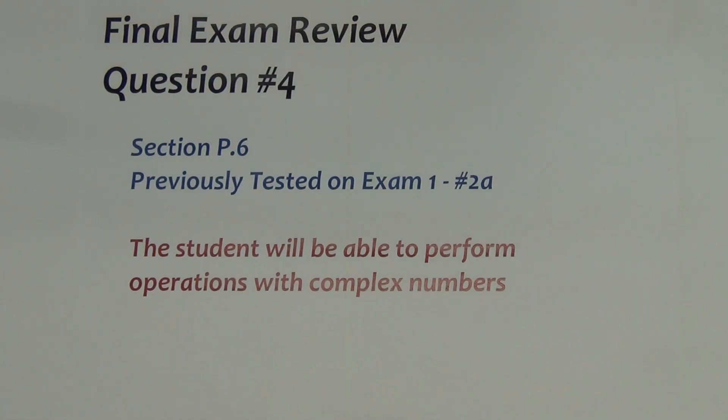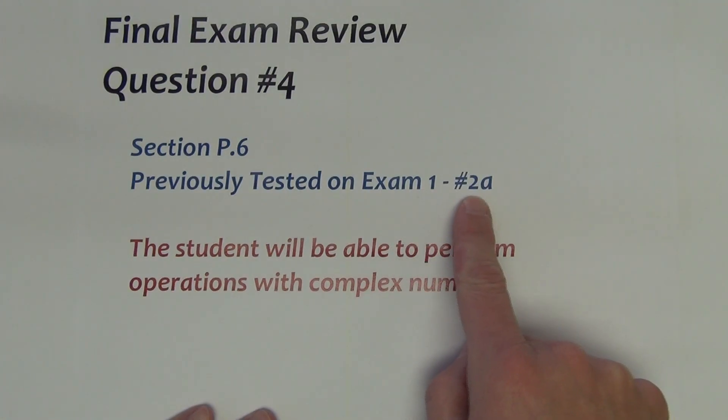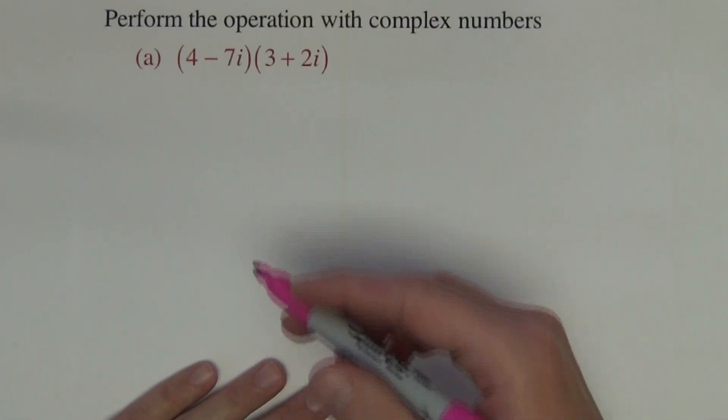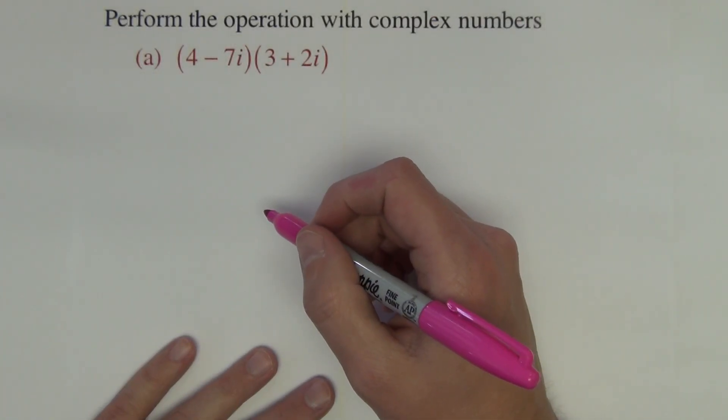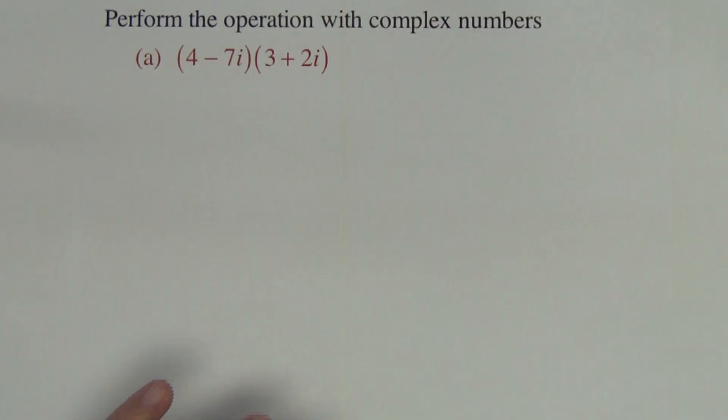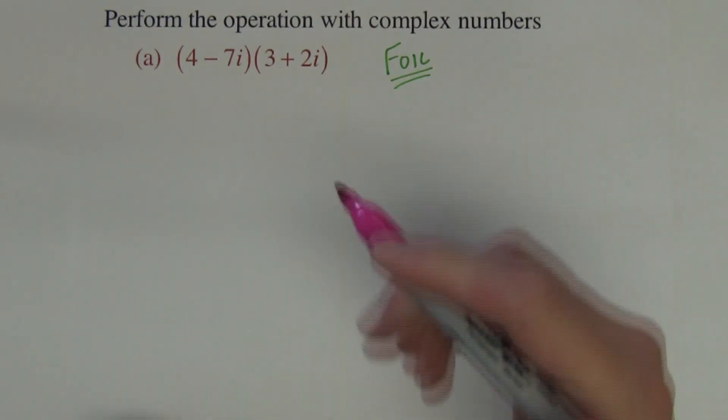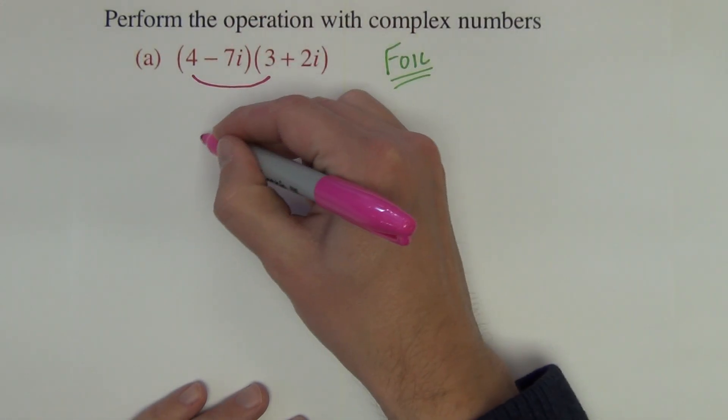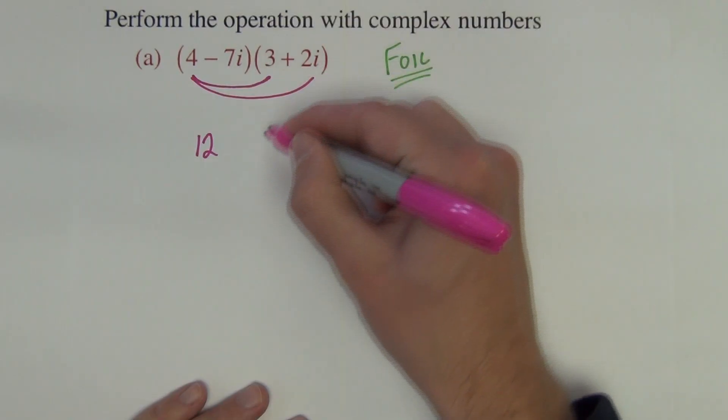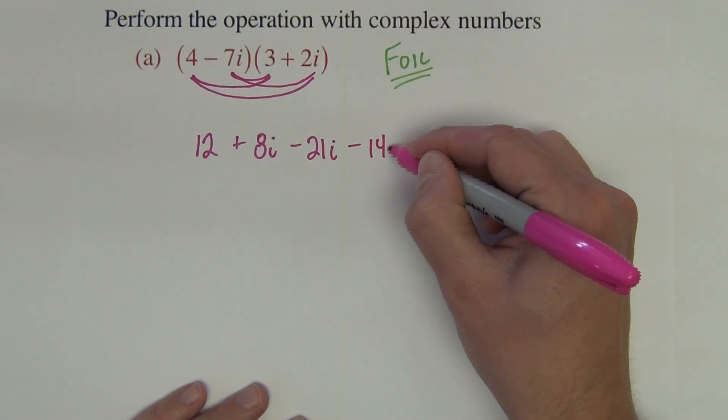Next question comes from section P.6. It was previously tested on exam 1, number 2a. The student will be able to perform operations with complex numbers. The problem that you might see on the test is going to be a product. The only question is, how is the product going to be presented? In this first example, you have two binomials. When you see two binomials, this is a straight foil type problem. So we're going to do first, which is 12, outside which is 8i, inside is negative 21i, and then the last is negative 14i squared.